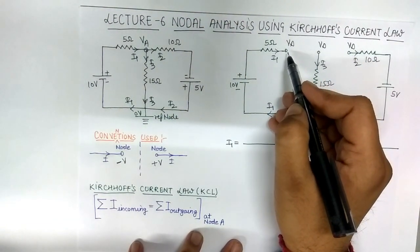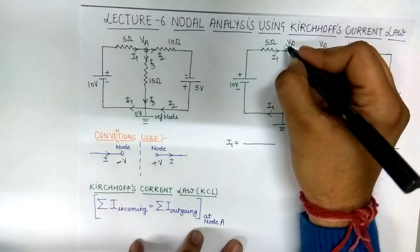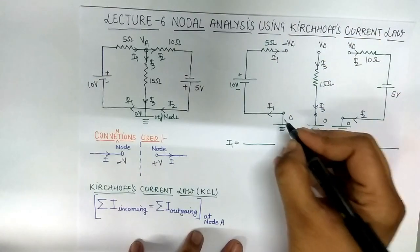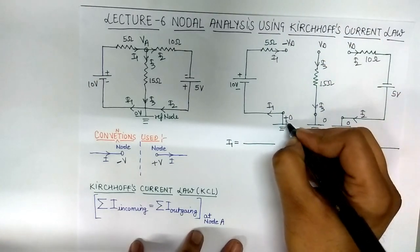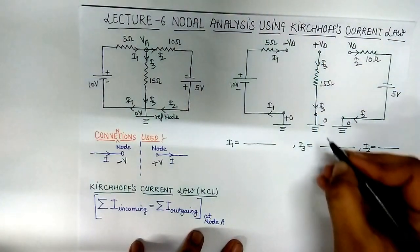If current is incoming, the potential of a particular node is minus. Current is outgoing, this is plus. Current is outgoing, this is plus VA.